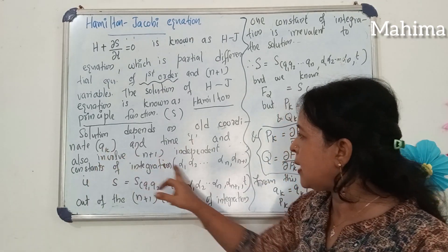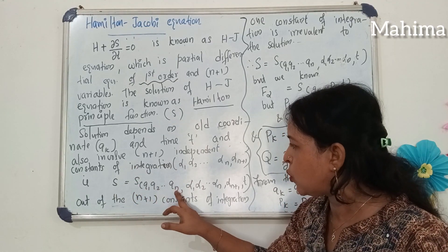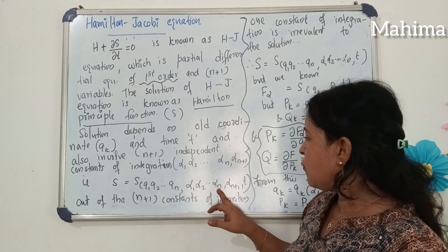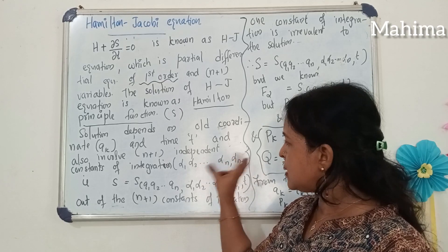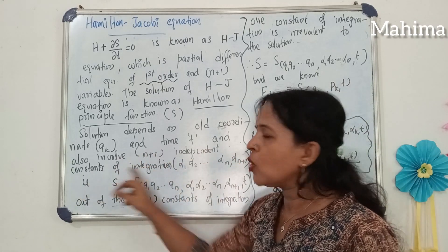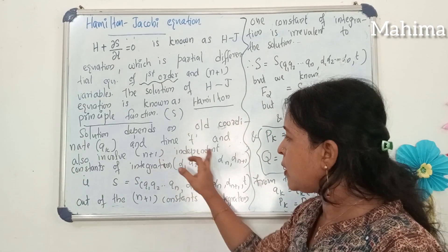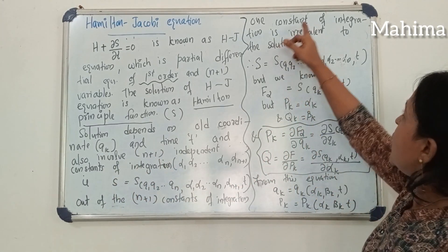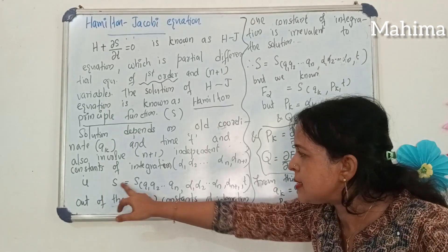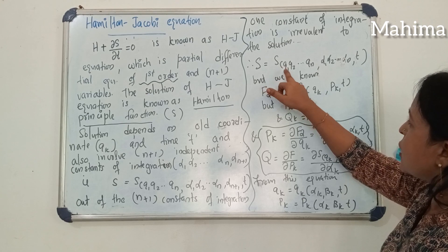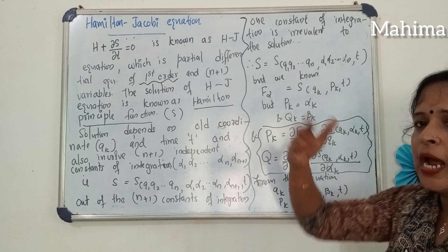S is a function of Qk, t, and n+1 constants of integration. Therefore S is a function of Q1, Q2 up to Qn, alpha 1, alpha 2 up to alpha n, and alpha n+1, and t. But out of the n+1 independent constants of integration, one of the constants is irrelevant to the solution. So we can write S as a function of Q1, Q2 up to Qn, alpha 1, alpha 2 up to alpha n (not alpha n+1), and t.